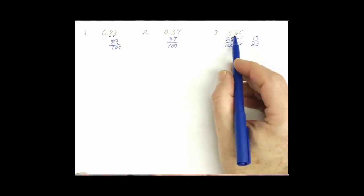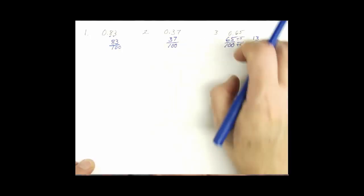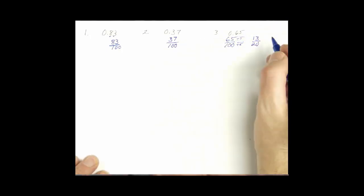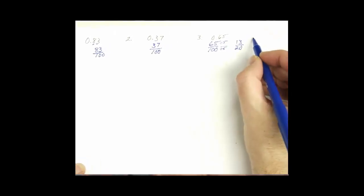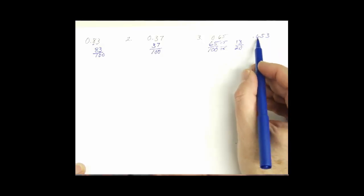So what the skill then is going to be when we read the number, we simply write it as a fraction. So how would that play out if I had three numbers? Let's say we had 0.653. We would have tenths, hundredths, thousandths.